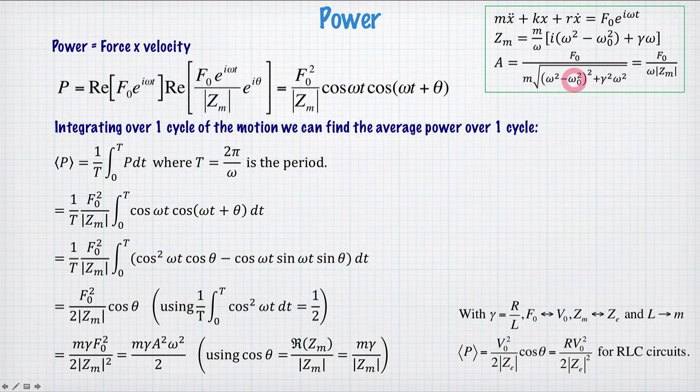So the amplitude of the oscillation was given by this, in terms of the force and the driving frequency and the resonant frequency, and it can be expressed in terms of the impedance like this. So in fact, we can find the total average power is given by mγA²ω²/2.